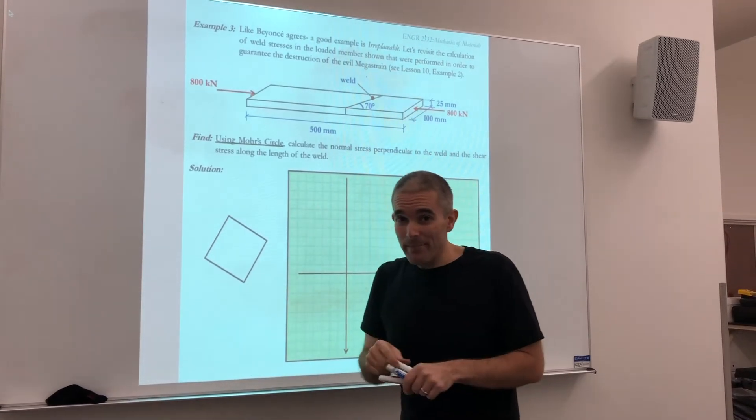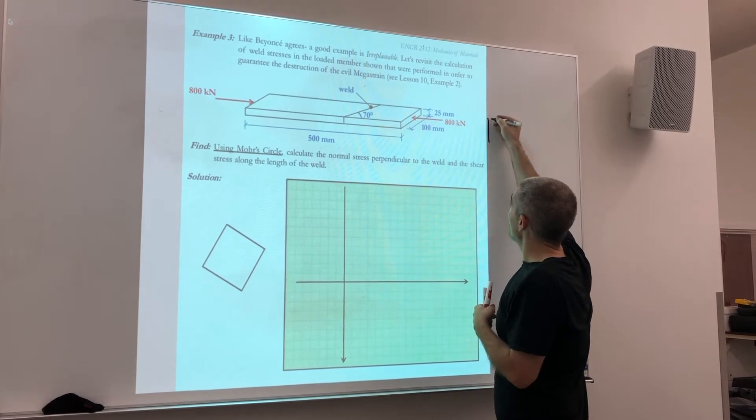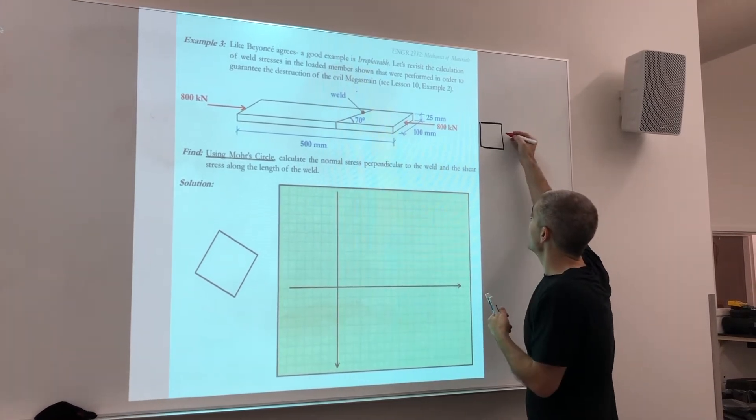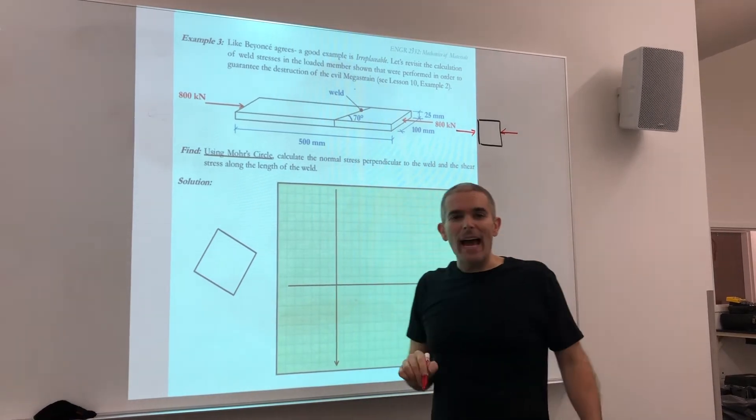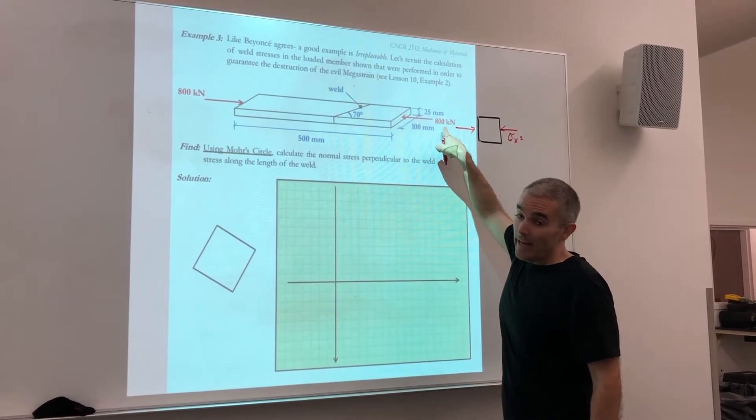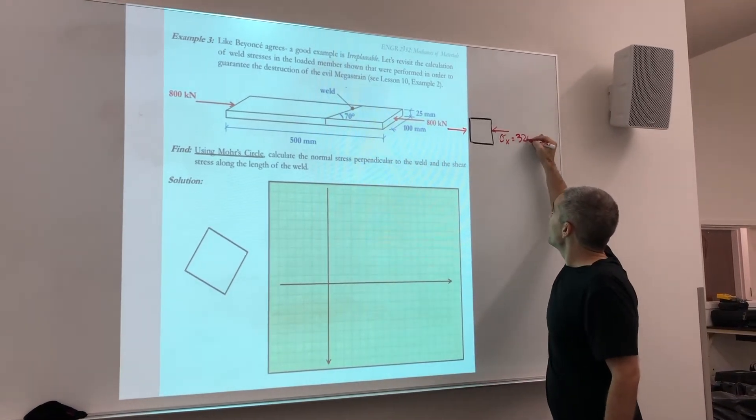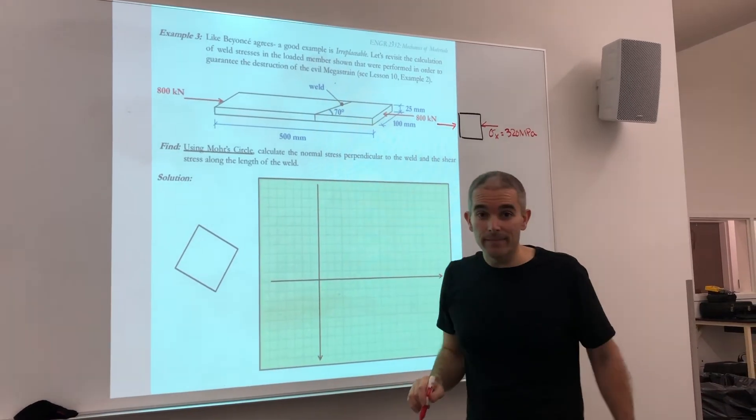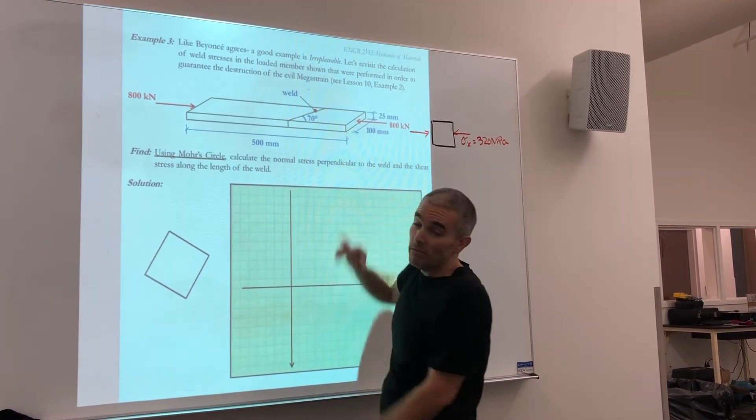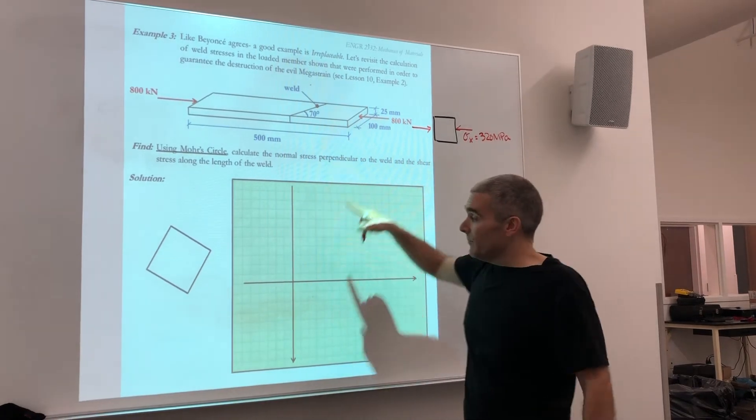The first step is to figure out the initial conditions. In our initial condition, if I rotate this plate upward, I have a block that has stress pushing on it in the x direction. That magnitude of stress is 800,000 Newtons divided by this area, which from the previous example was 320 megapascals in compression. There was no stress in the y direction, no shear stresses applied. This is our starting block for sketching Mohr's Circle.